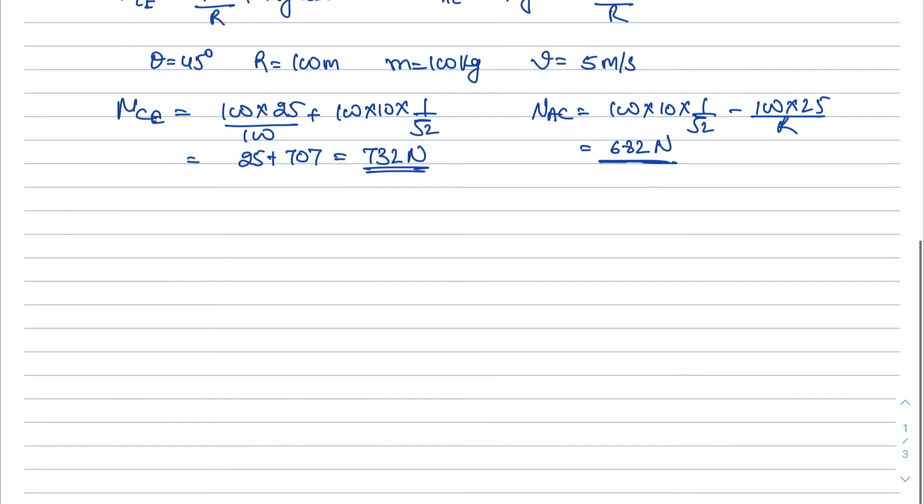Now for part D, this time we have to calculate what should be the minimum friction coefficient between the road and the tire, which will ensure that the cyclist can move with constant speed. So from the earlier part, we get to know that the NAC is less than NCE.